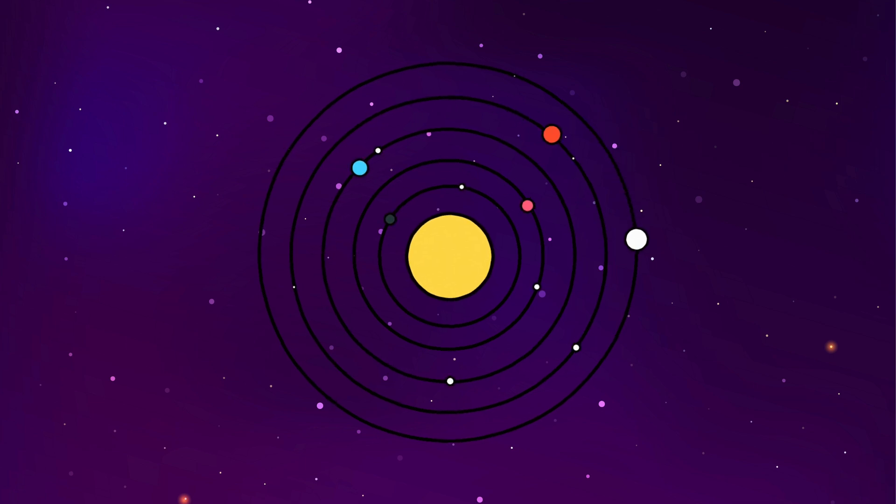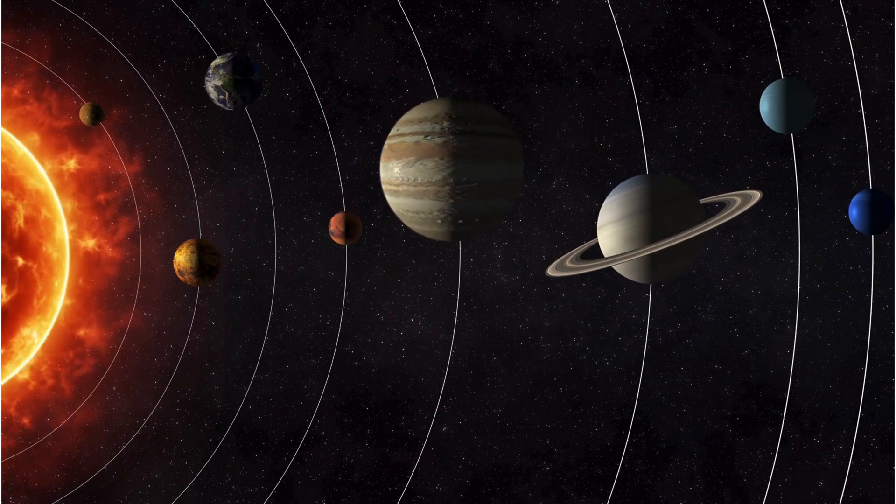Today, we're going to learn about the eight different planets in our solar system. But first, let's talk about the Sun.